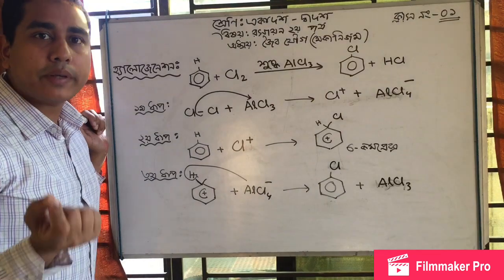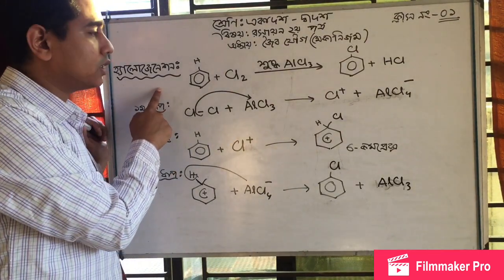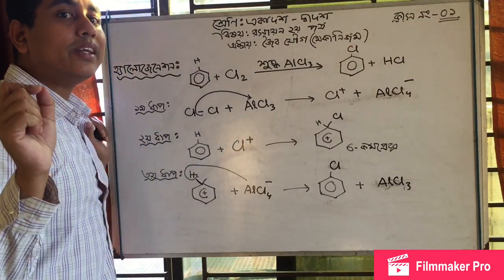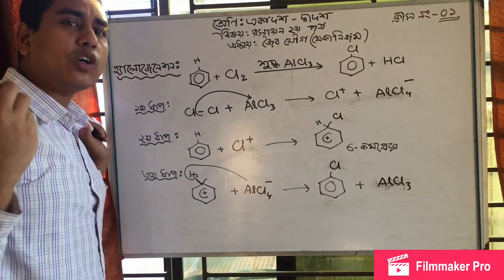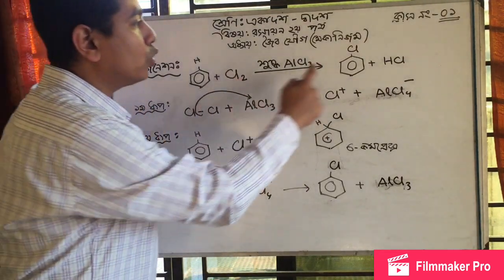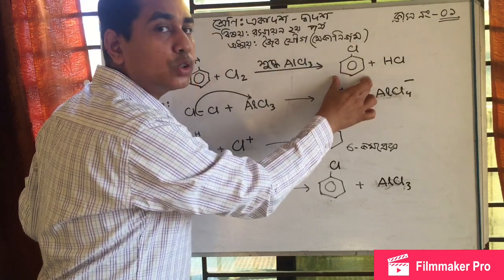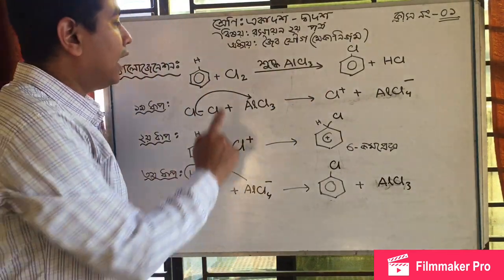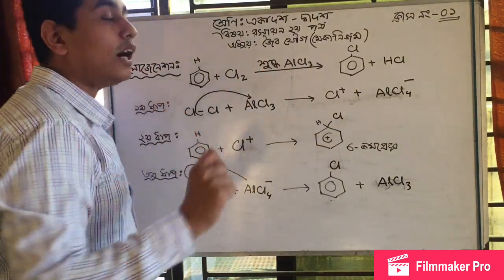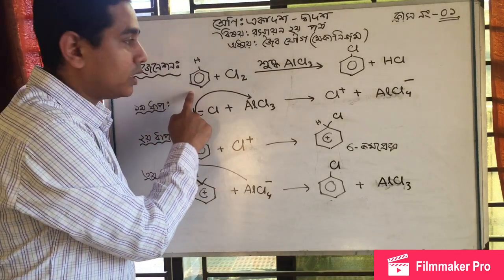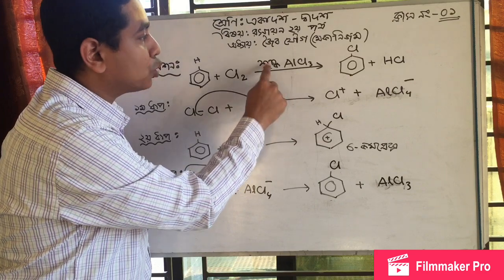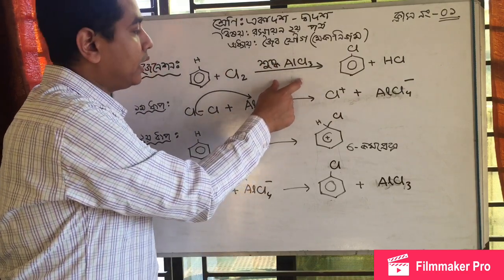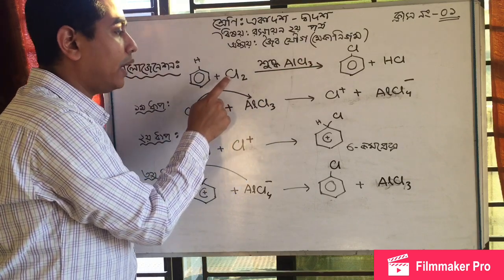Now halogenation. We are going to talk about halogenation with benzene using hydrogen and chlorine. The halogens are chlorine, bromine, and iodine. Halogenation uses these halogens with catalysts.